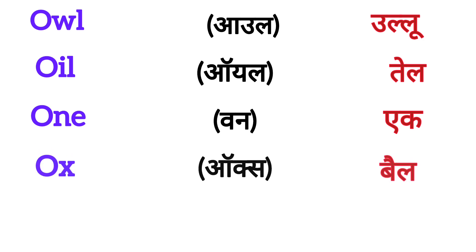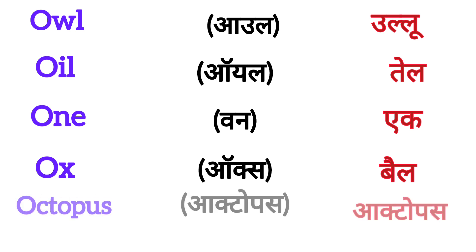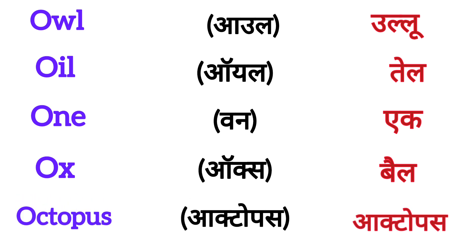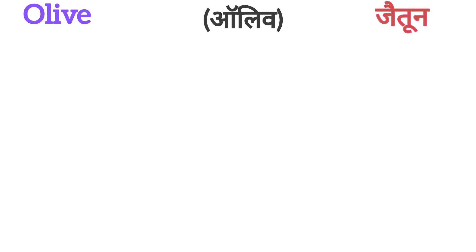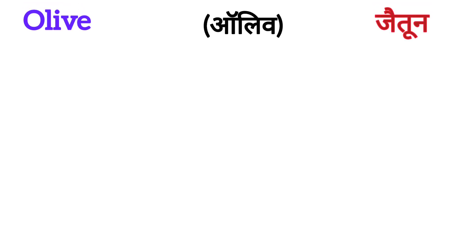Next is OX. OX means BELL. Next word is OCTOPUS. OCTOPUS means OCTOPUS. Next word is OLIVE. OLIVE means JAYTUN.